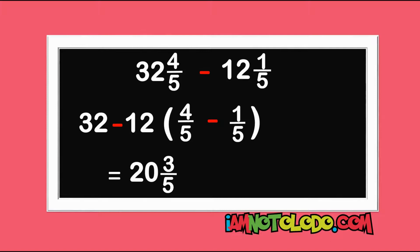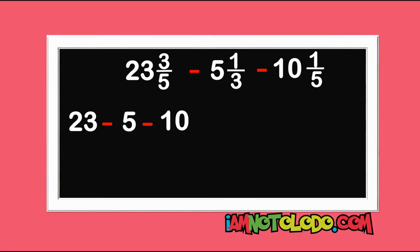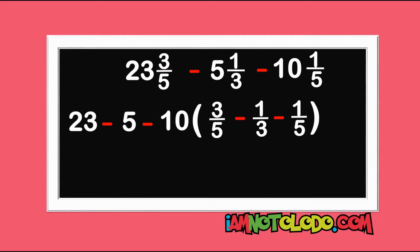Let's solve the next question. Let us separate our whole number from the fraction like this: 23 minus 5 minus 10. Open the brackets and write what is left: 3 over 5 minus 1 over 3 minus 1 over 5. Close your brackets. 23 minus 5 is 18, then minus 10 is 8.